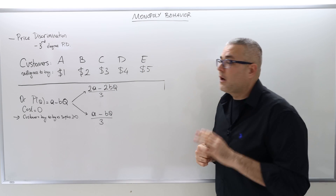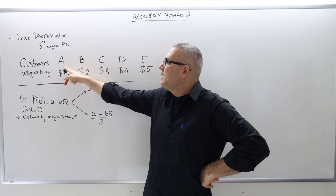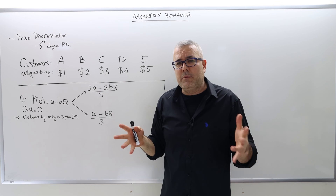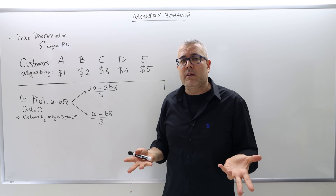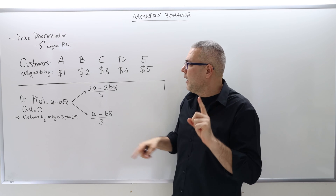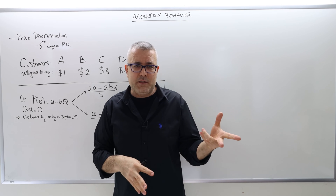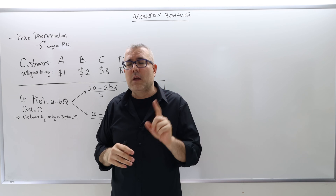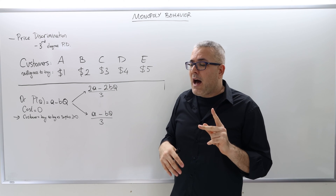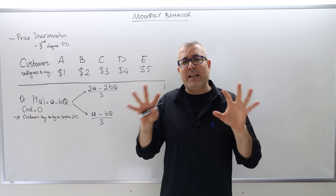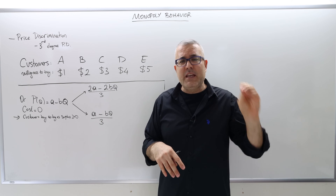In third-degree price discrimination, the key is the following. The monopolist cannot distinguish customers A, B, C, D, and E individually. I don't know my customers' willingness to pay even if I can see their ID. What the monopolist knows is that there is a customer whose willingness to pay is $1, another at $2, $3, $4, and $5 — but not which customer is which.